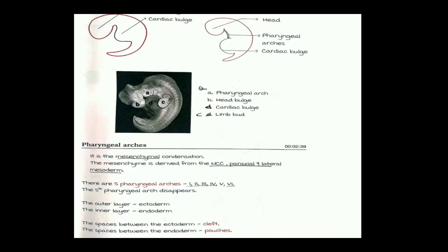In the pharyngeal arches, the outer layer is made up of ectoderm and the inner layer is made up of endoderm. The spaces between the ectoderm layers of the pharyngeal arches are called clefts, whereas the spaces between the endoderm are called pouches.